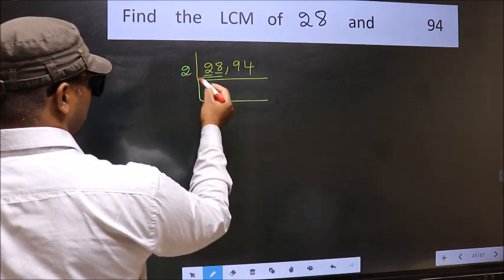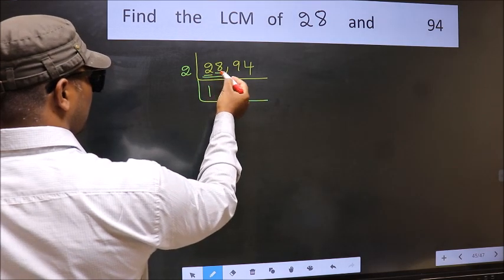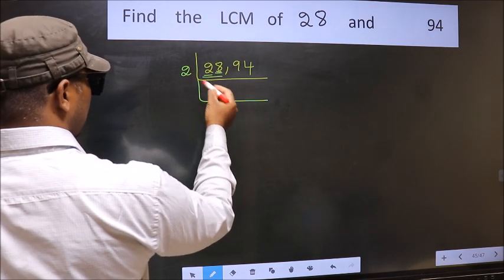First number 2, when do we get 2 in the 2 table? 2 ones are 2. The other number 8, when do we get 8 in the 2 table? 2 fours are 8.